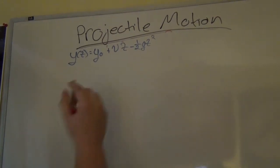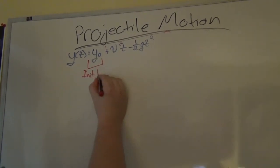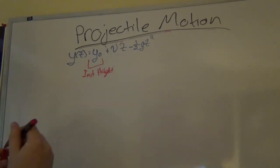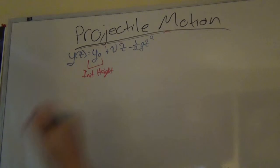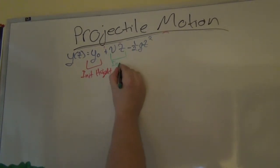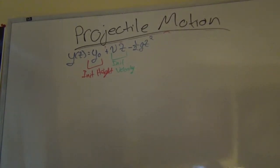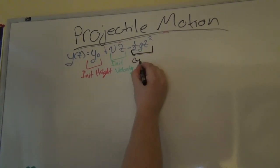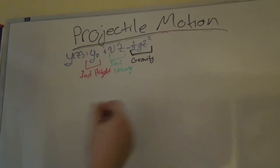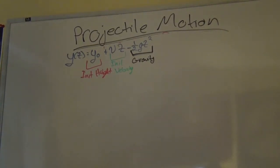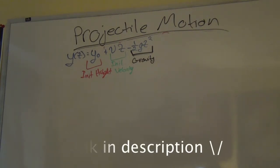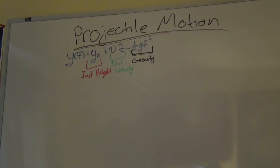To label everything: y-naught is your initial height, v-y is the initial vertical velocity, and the minus one-half g t-squared term accounts for gravity. If you're wondering why it's one-half g t-squared, it comes from the kinematic equations, which you should already know if you're taking physics 1. If not, just look up kinematics — you can learn it very quickly. There are other kinematic equations, but this is the one you'll use the most.